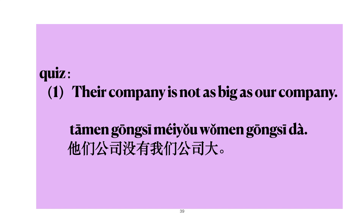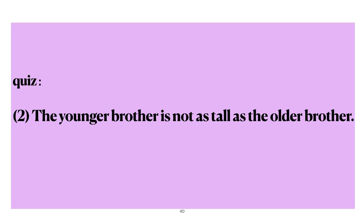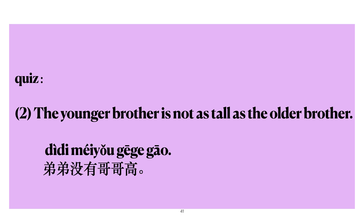Second one: 'The younger brother is not as tall as the older brother.' The answer is: 弟弟没有哥哥高。 So did you get both of them correct?